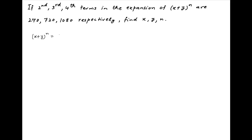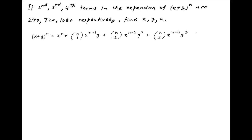The standard binomial expansion of (x + y)^n is equal to x^n plus n choose 1 times x^(n-1) times y plus n choose 2 times x^(n-2) times y squared plus n choose 3 times x^(n-3) times y cubed, and so on.